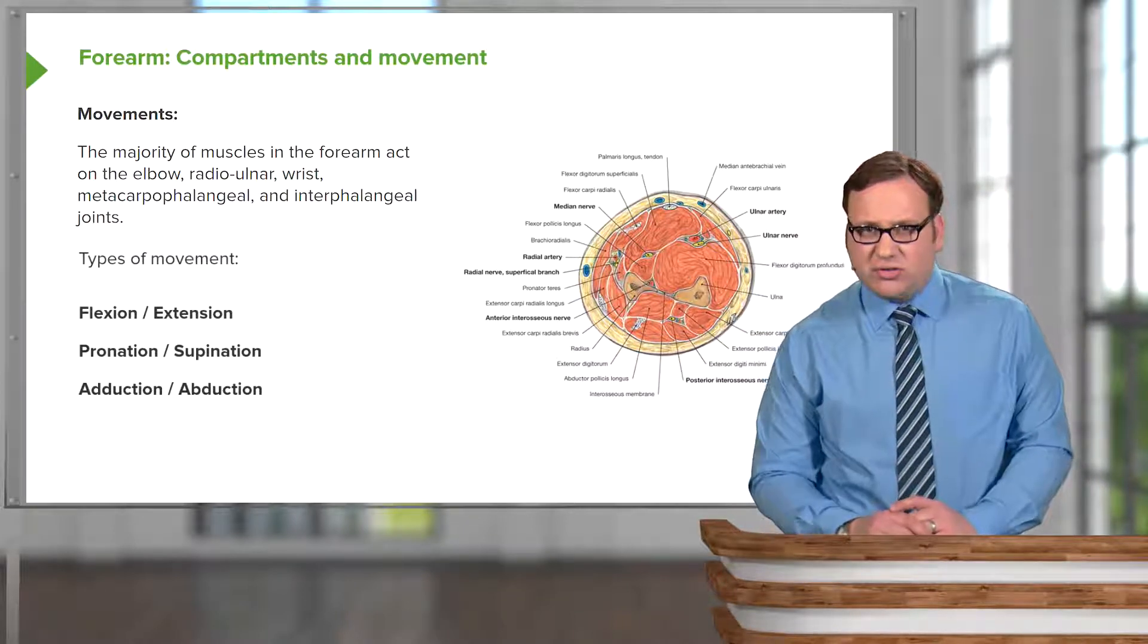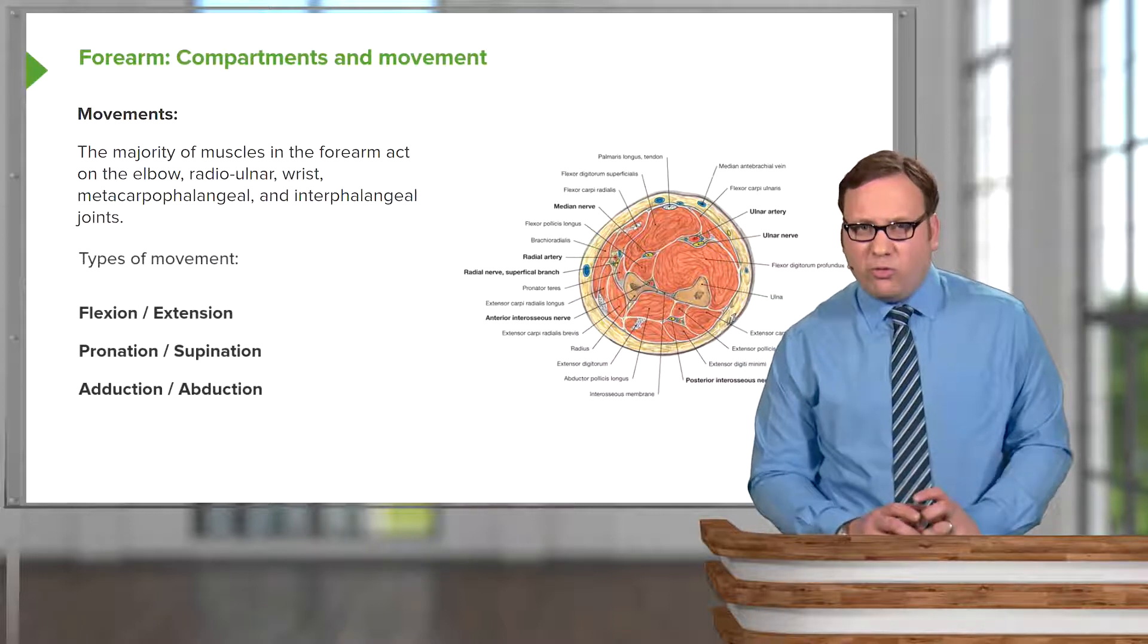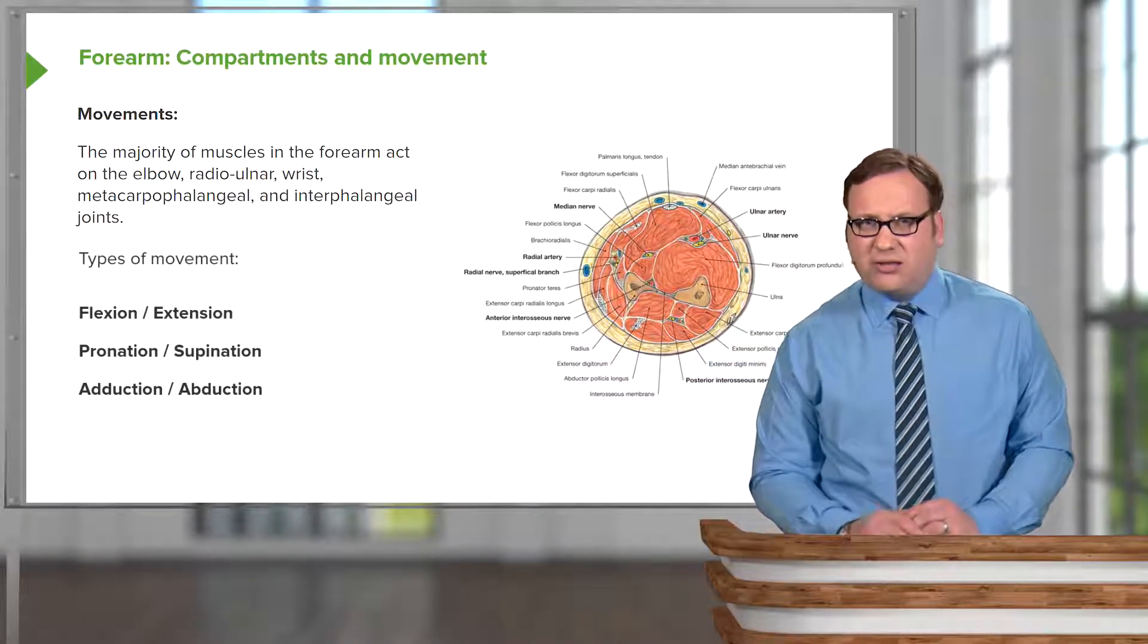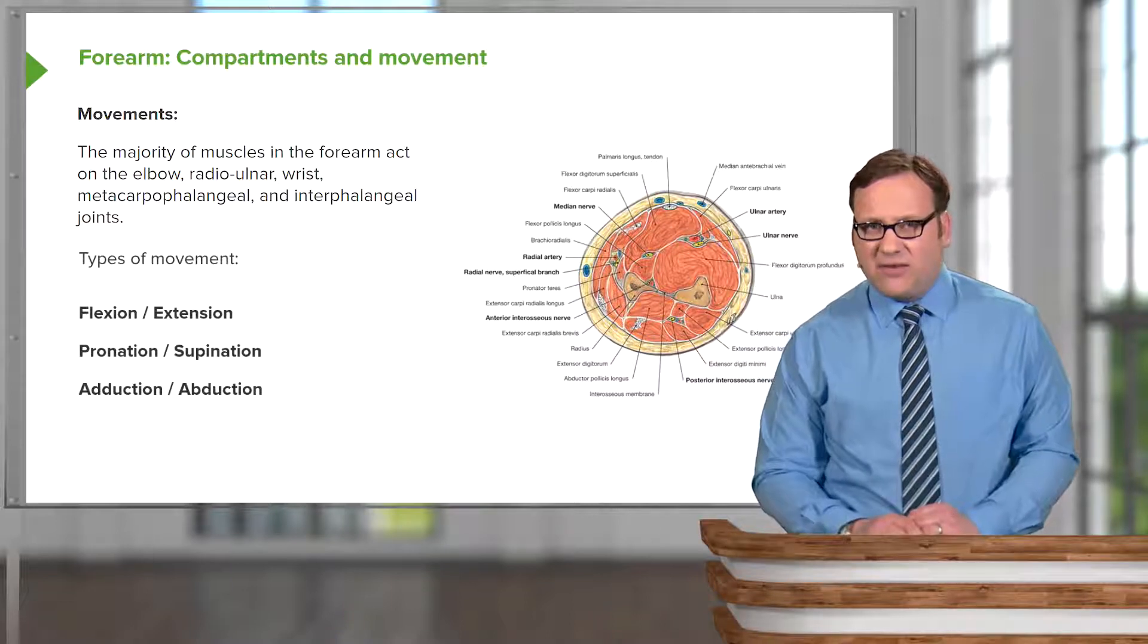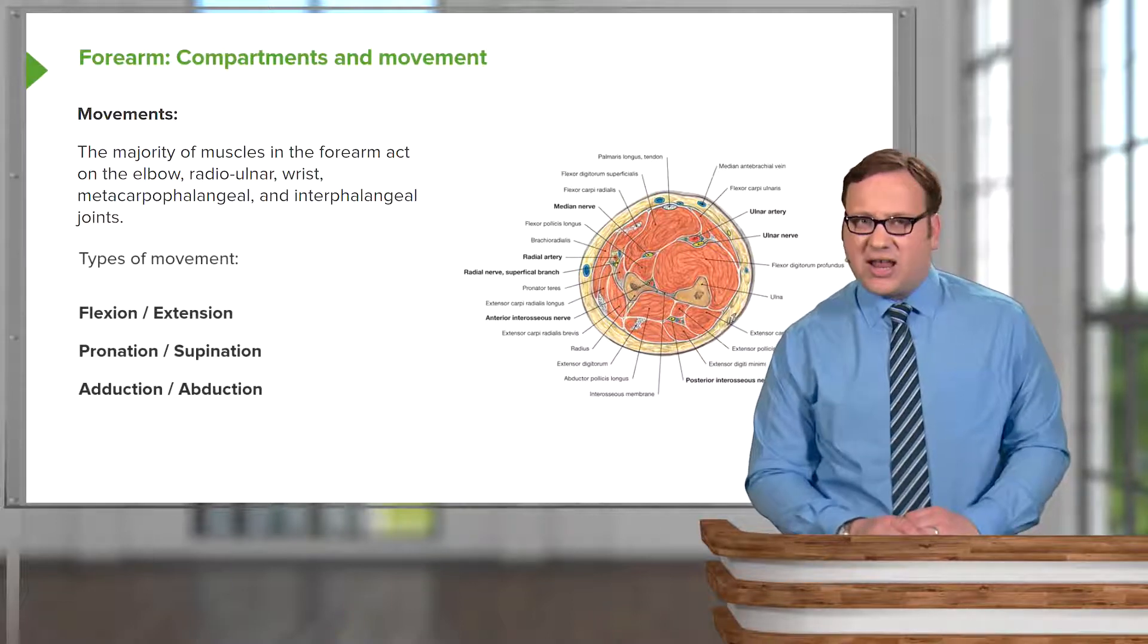And whilst the majority of the muscles in the forearm act on the elbow, they also act on the radial ulnar, the wrist, metacarpophalangeal and interphalangeal joints.